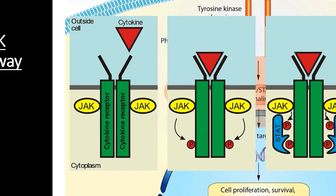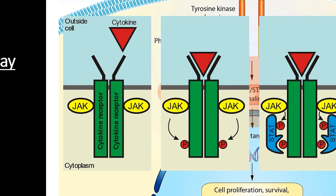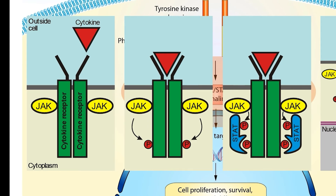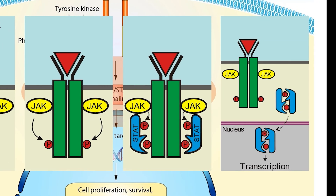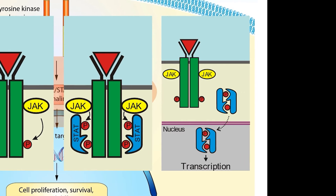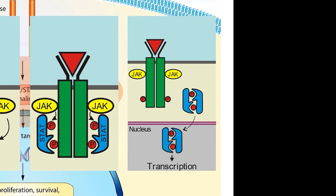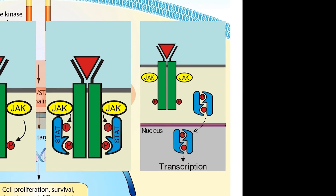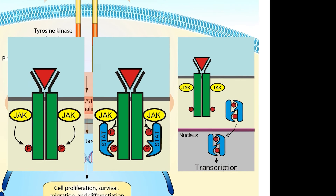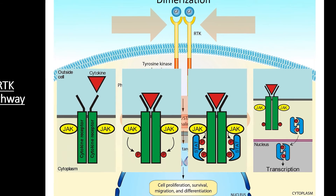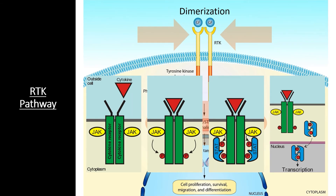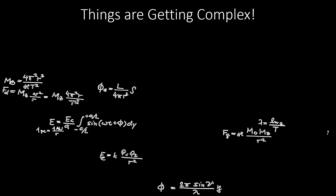Those phosphorylated tyrosines can pass phosphate groups to a large number of other proteins in a phosphorylation signaling cascade. For example, in the JAK-STAT pathway: JAK proteins associated with RTK receptors are the first to be phosphorylated upon dimerization. The JAK proteins then pass phosphate groups to STAT proteins, which combine into complexes that activate the transcription of various genes within the nucleus — illustrating the complex phosphorylation cascades RTK pathways can involve.